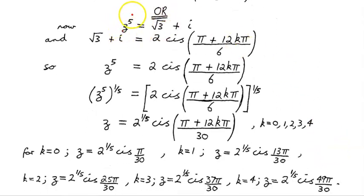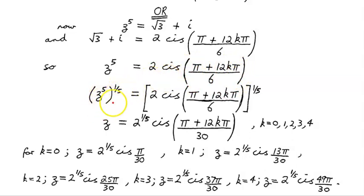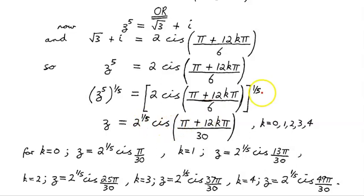Here's another way to set out the working. We have z to the power of 5 equals √3 + i, which is 2 cis(π/6 + 2kπ). Applying de Moivre's theorem to both sides by raising to the power of 1/5: z to the power of 5, to the power of 1/5, gives us z. On the right, 2 cis((π + 12kπ)/6) to the power of 1/5 gives z = 2^(1/5) cis((π + 12kπ)/30), for k = 0, 1, 2, 3, 4.